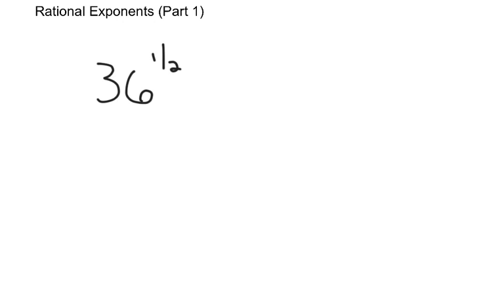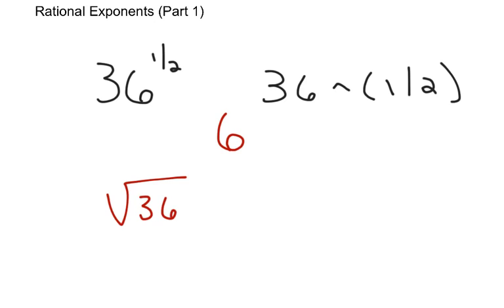If you put 36 raised to the 1 half power in your calculator, it looks like this if you have the new operating system. If you have the old operating system, when you type it in, it has to look like this. Notice that the exponent is in parentheses. You find out that the answer is 6. Well, that's kind of interesting because the square root of 36 is also 6. Maybe that means that raising something to the 1 half power and square rooting it are exactly the same thing, which they are.